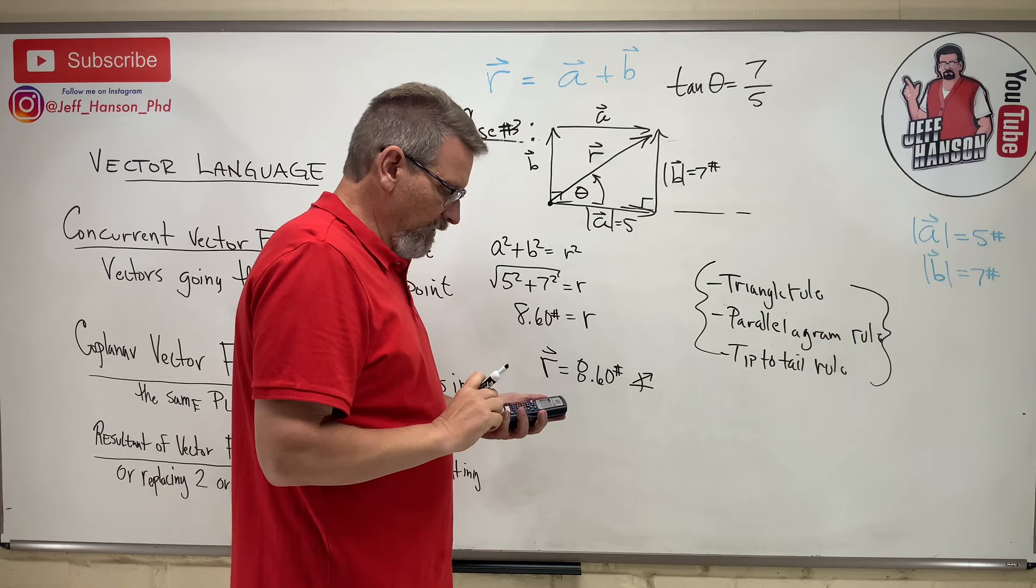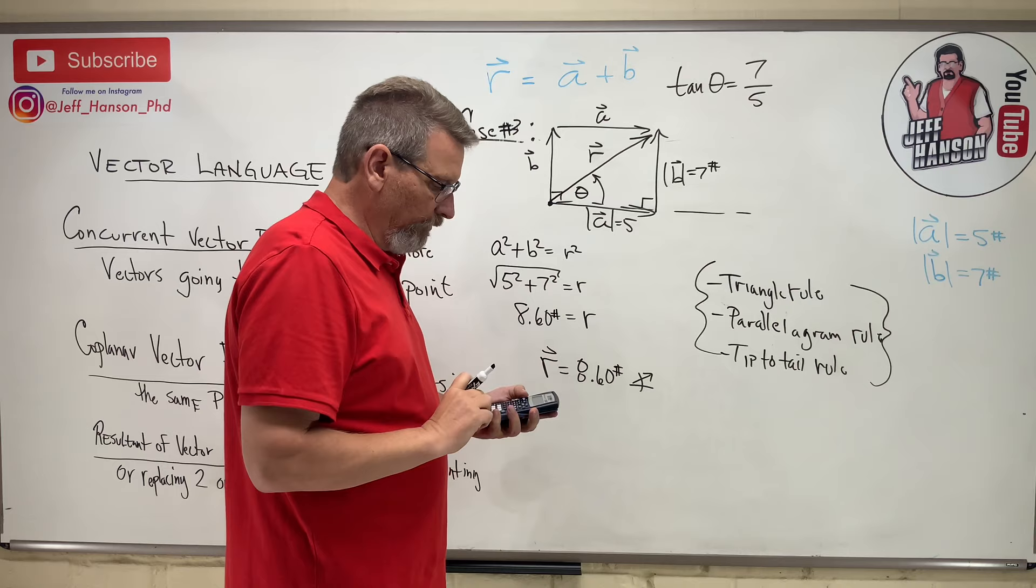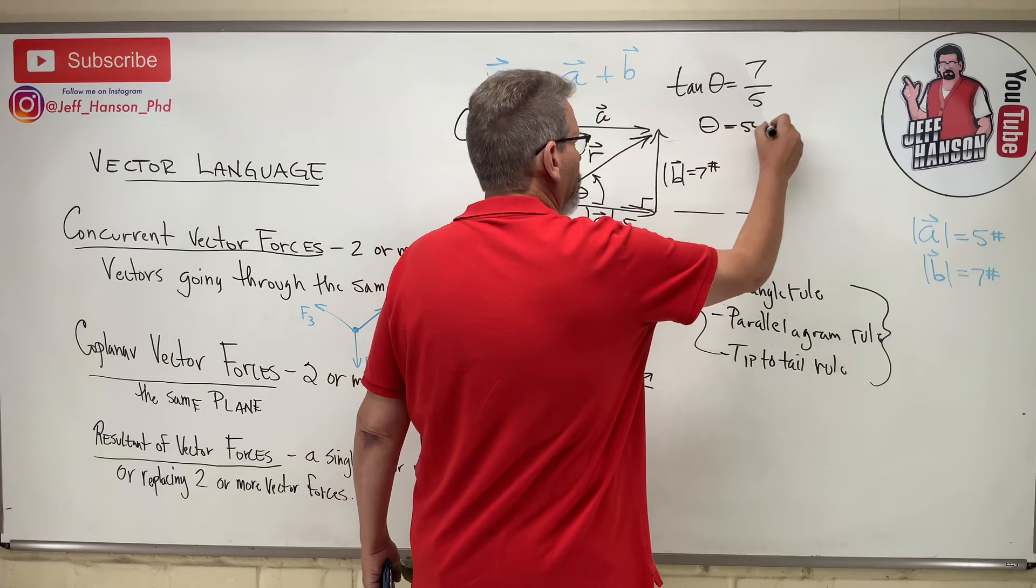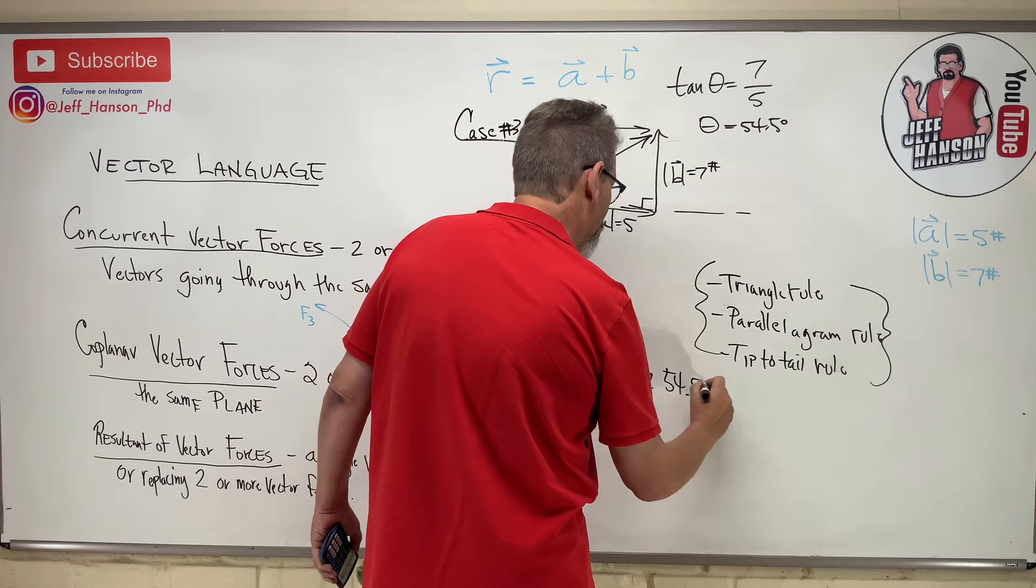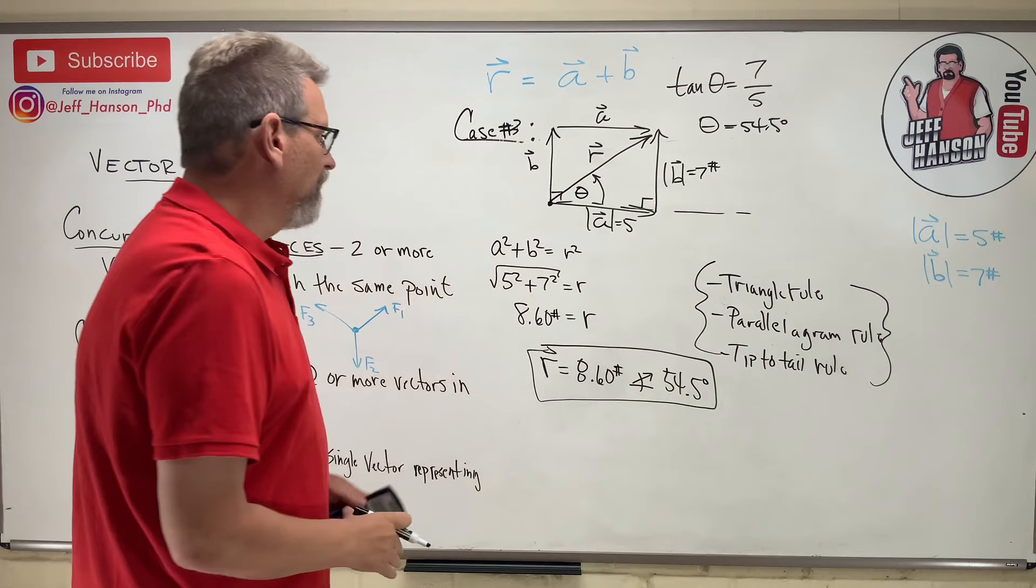Okay, here we go. 7 divided by 5 equals, and then inverse tan, inverse tan of the answer is equal to 54.5 degrees. So, theta equals 54.5 degrees. So, 54.5 degrees, and that is how you do that. And that's adding vectors together.